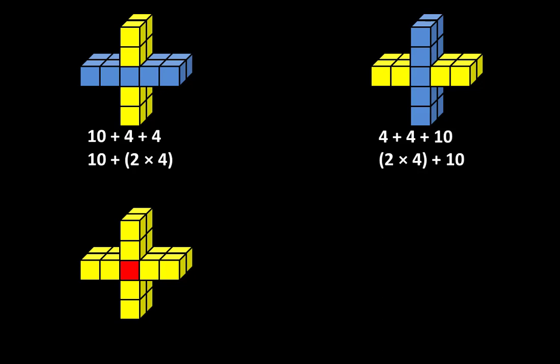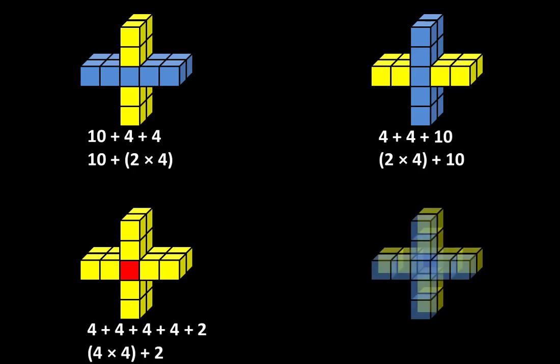The third structure can be described as four plus four plus four plus four plus two, or as four groups of four plus two. And the fourth structure can be described as nine plus nine, or as two groups of nine.